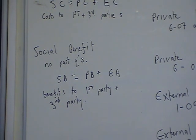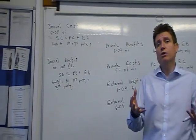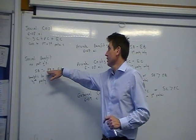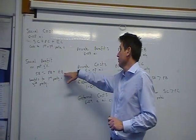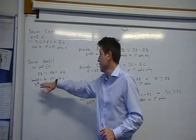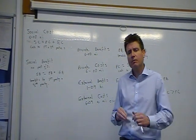But, there are also external benefits. For instance, I'm likely to pay more taxation, which, therefore, can pay for welfare and defence and everything like that. So, social benefits are equal to private benefits plus external benefits. Or, alternatively, I can say benefits to first parties and third parties.